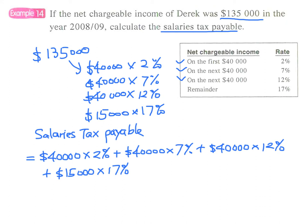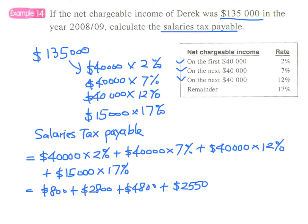Finally, the salary tax payable is calculated based on this formula: $40,000 times 2%, then times 7%, 12%, and finally 17%. This becomes $800 plus $2,800 plus $4,800 plus $2,550, and finally the answer is $10,950.